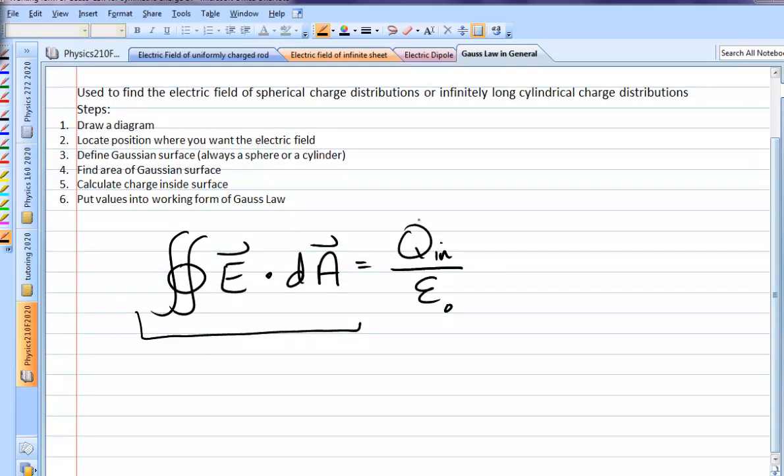The right-hand side, it's either going to be a simple calculation of how much charge we're dealing with inside what's called our Gaussian surface, or you may have to integrate to get the right-hand side.